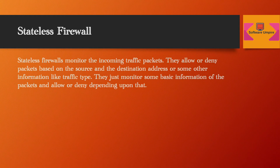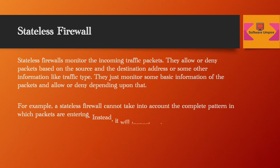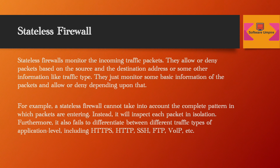Stateless firewalls monitor incoming traffic packets. They allow or deny packets based on the source and destination address or other information like traffic type. They monitor some basic information of the packets and allow or deny depending upon that. A stateless firewall cannot take into account the complete pattern in which packets are entering; instead, it will inspect each packet in isolation.